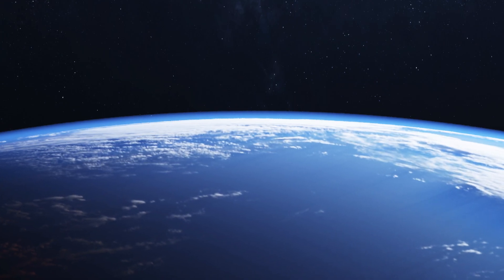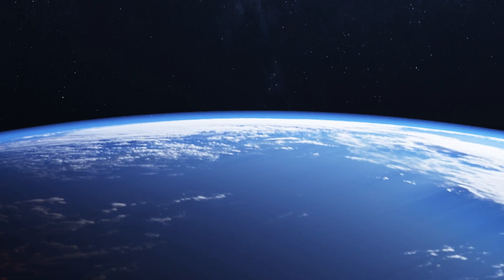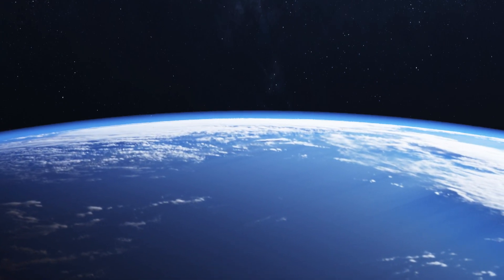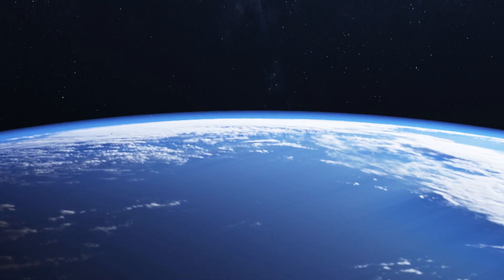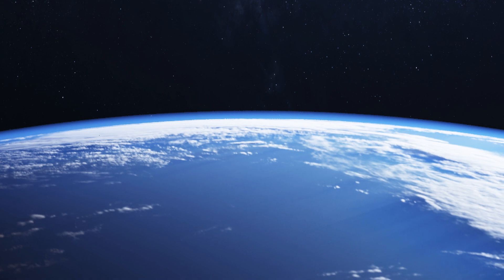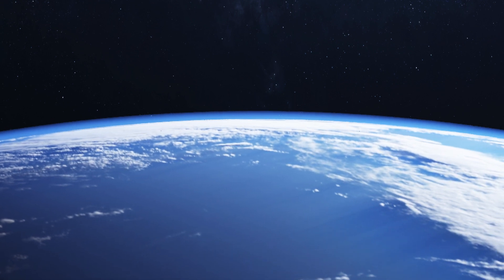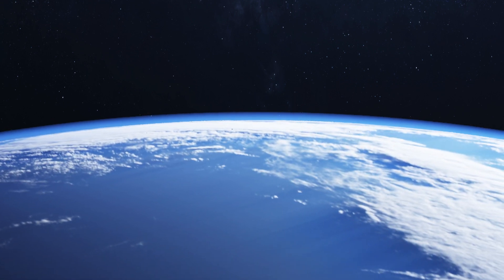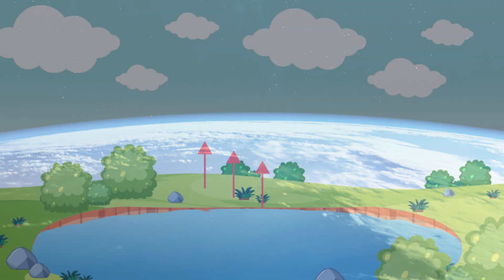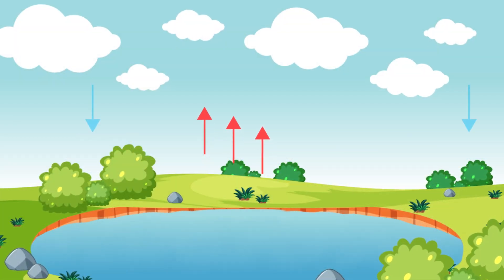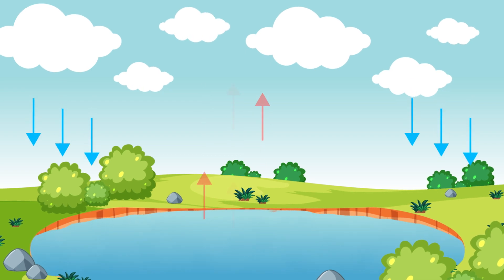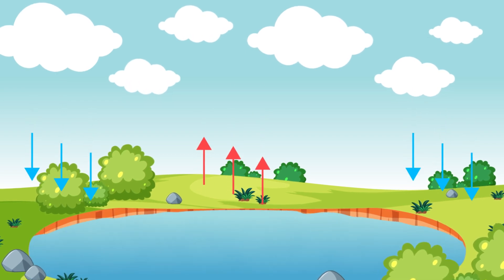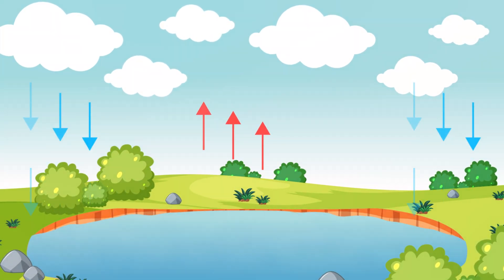About 71% of Earth's surface is made of water, but water doesn't just stay in one place all of the time. Water moves through a process called the water cycle.